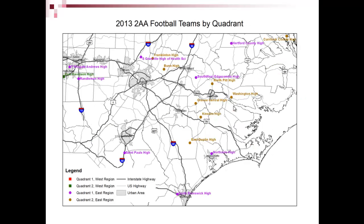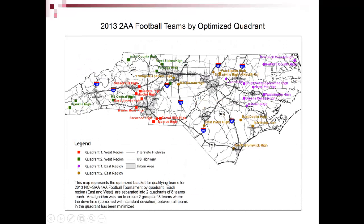For the 2AA east region, North Brunswick goes all the way up to Andrews, with Hertford and Southwest Edgecombe interspersed with the other quadrant. After grouping, the purple schools are together and the brown schools are together — North Brunswick still travels up to Andrews, Randleman, and St. Paul's along I-95. The grouping reflects both drive time optimization and the outlier correction discussed earlier.